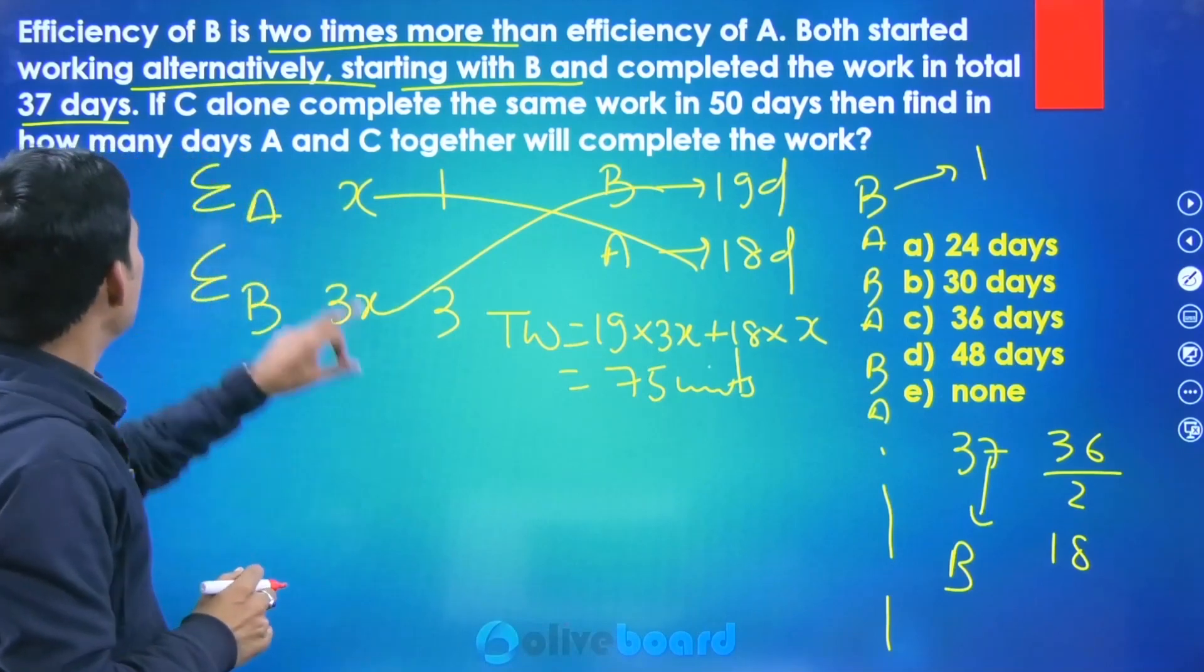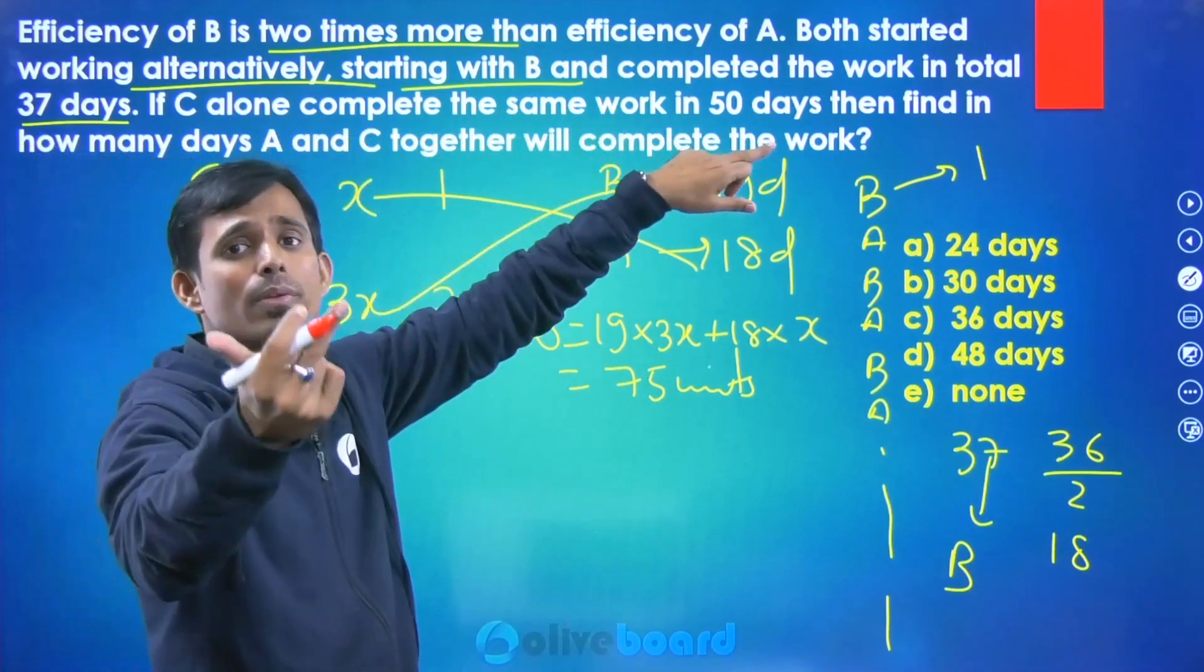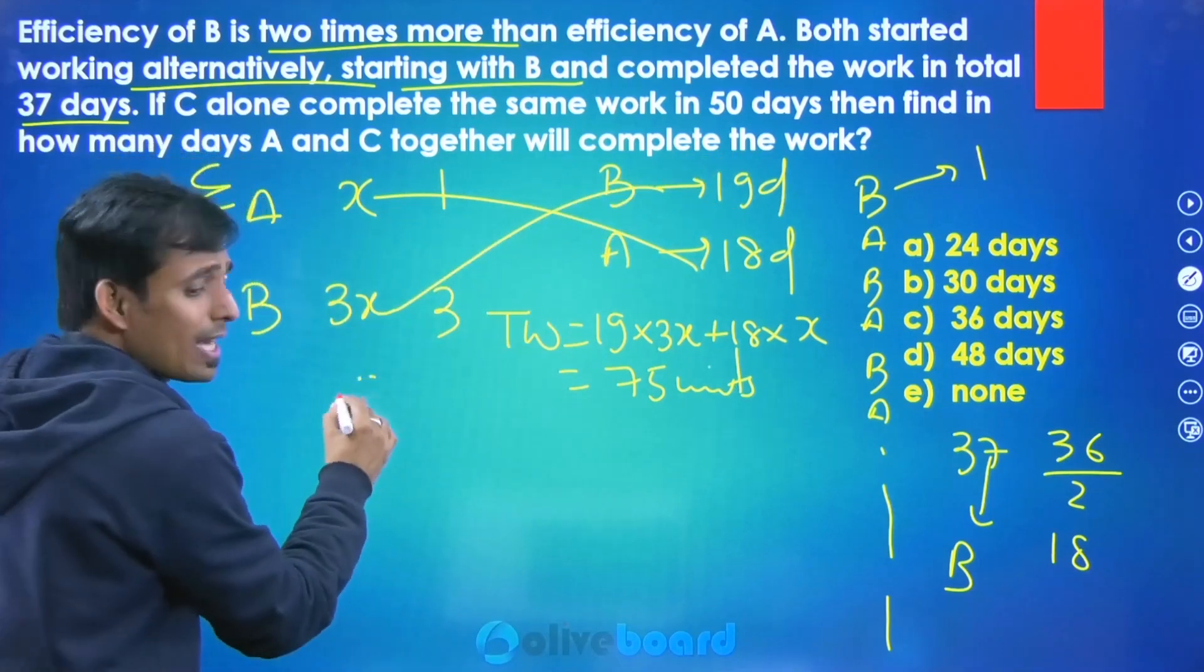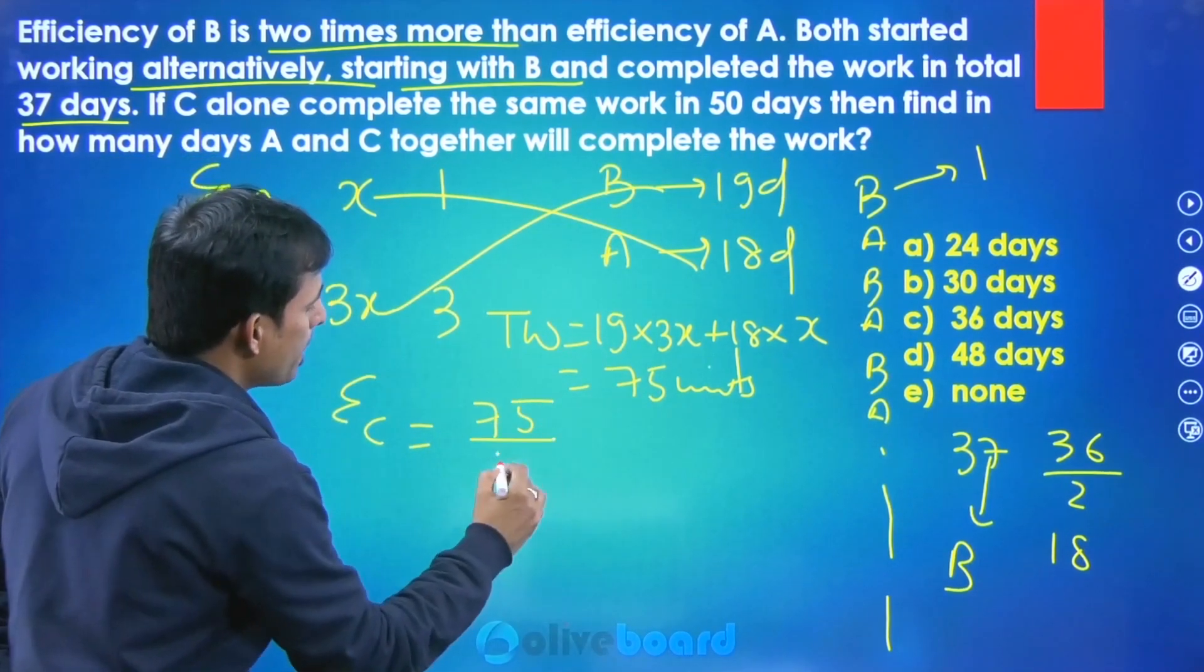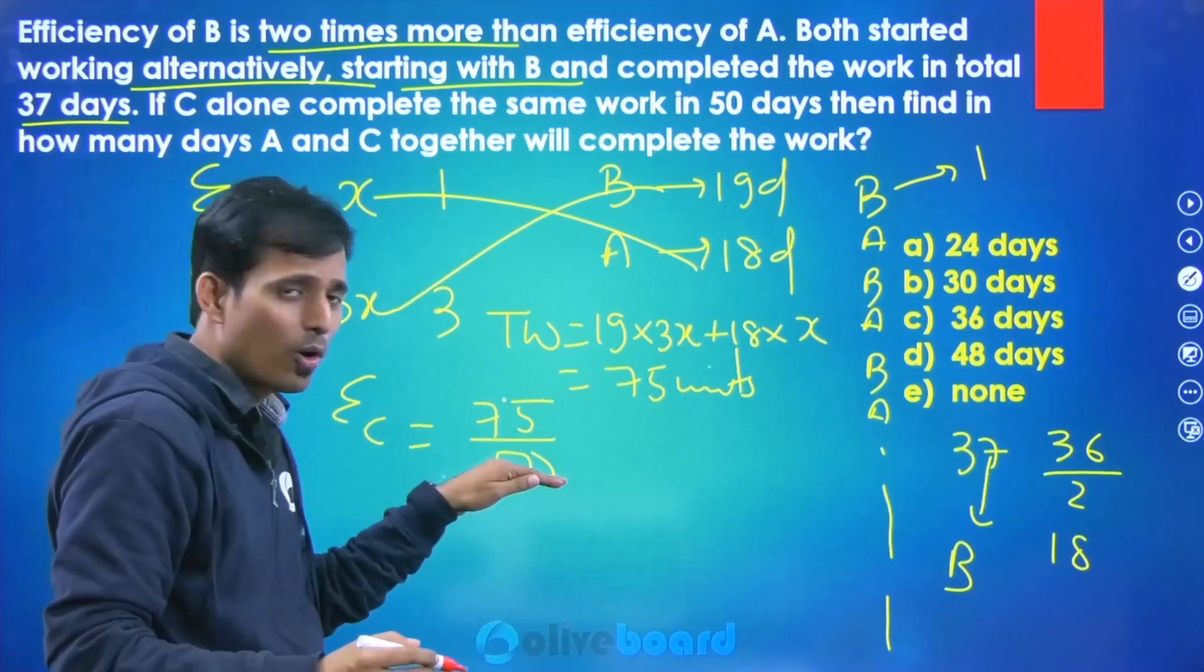Now question kya bola, C alone complete the same work in 50 days, C alone. So what is the efficiency of C? So that will be equal to 75 upon 50. So efficiency is what? Work upon time. So this will equivalent to 1.5, so this is the efficiency of C.